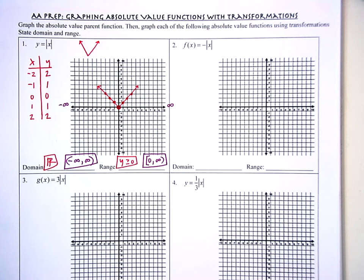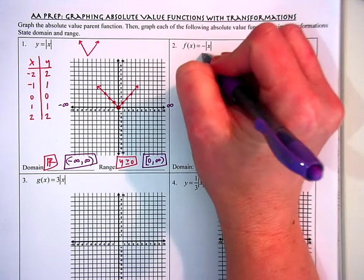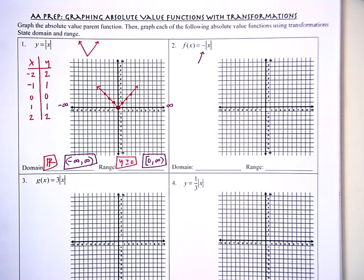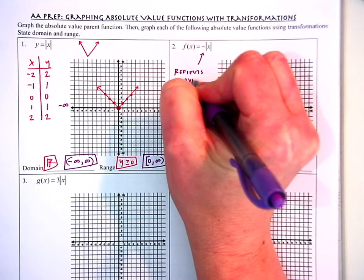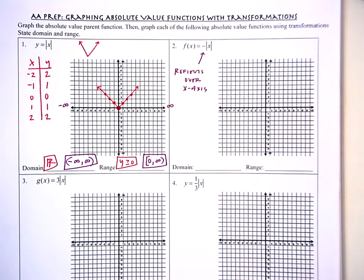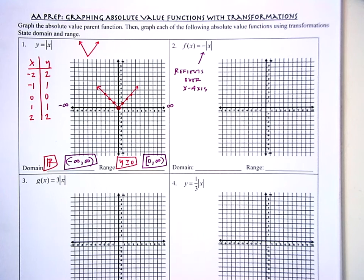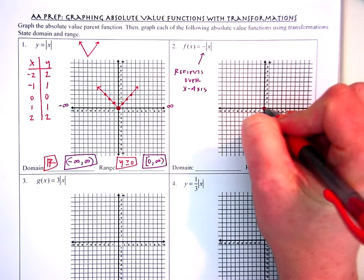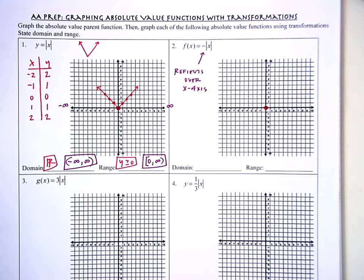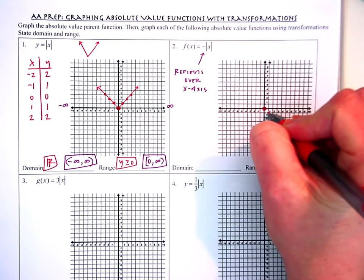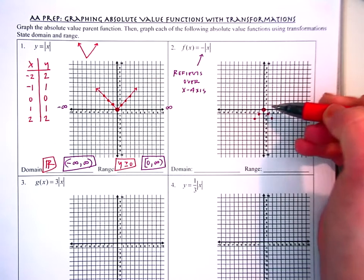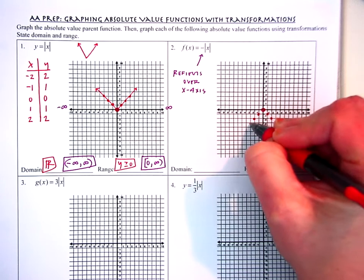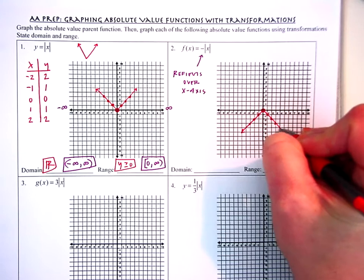Next up, I'm throwing at you just one transformation on the parent. In problem two, I see a negative in front of the absolute value bars. That signals that this function is going to reflect across the X-axis. So instead of being a V-shape pointing upward, it's going to go downward instead. I drop my anchor at the vertex at the origin, and instead of going up, I go down: over one, down one; over two, down two; over three, down three — on both sides.